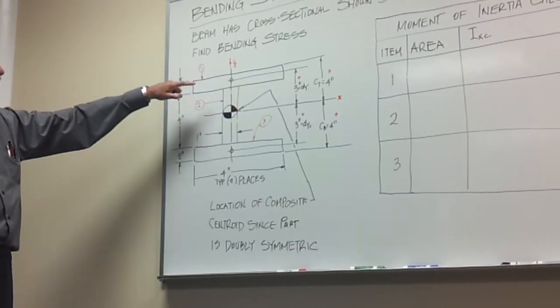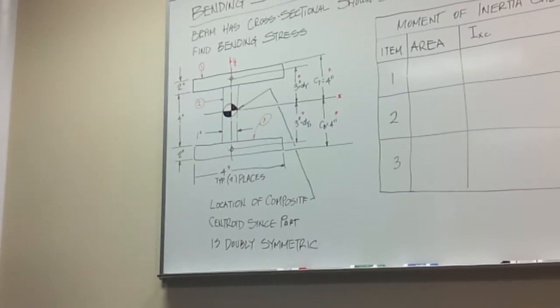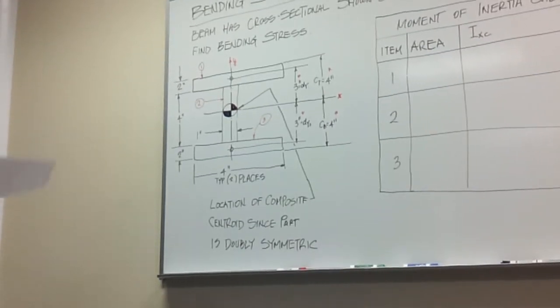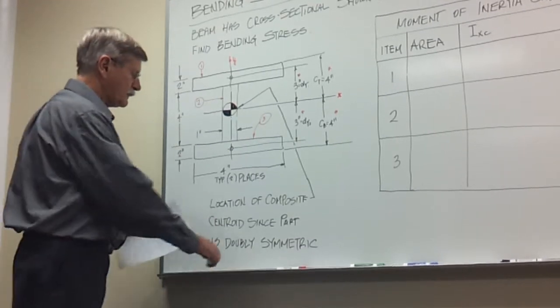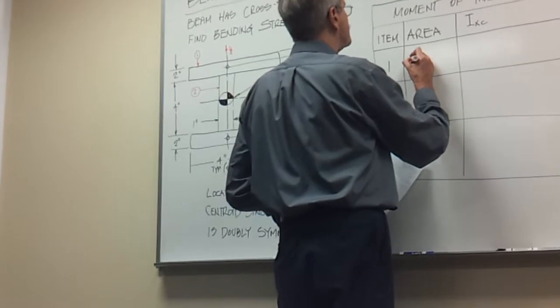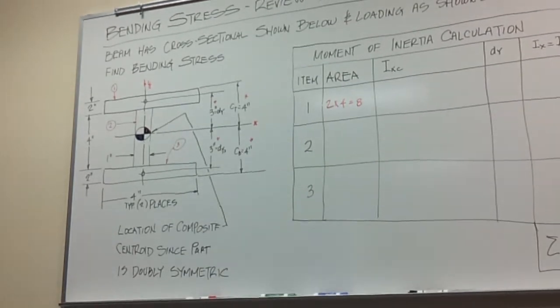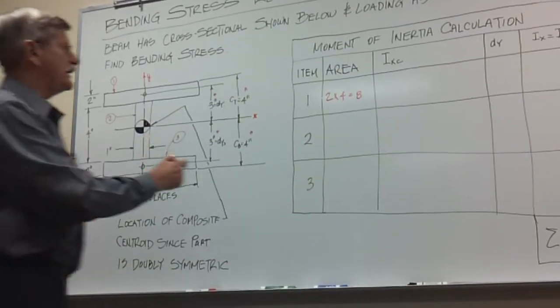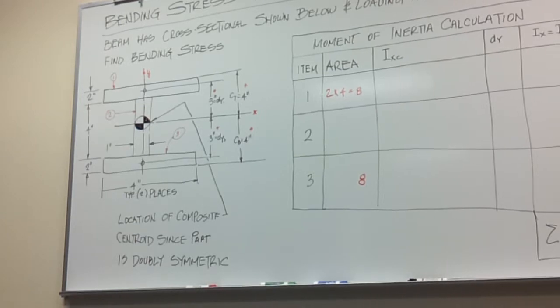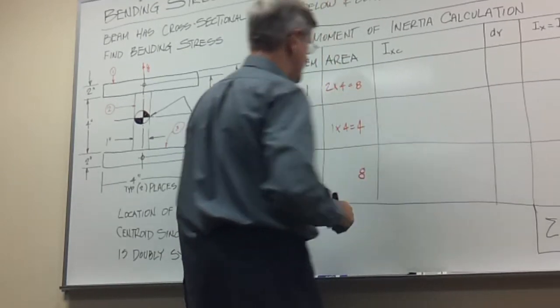How we wind up doing that is we're going to have to take the moment of inertia of the three parts and then apply the parallel axis theorem and then add up the total. Pretty much what we had done in the past. We will have to know what the area is for the parallel axis theorem. If you look at 1, this has been 2 times 4, and that equals 8. 3, I'm just going to write 8 because 3 and 1 are the same piece. 2, the area on that is 4 by 1.